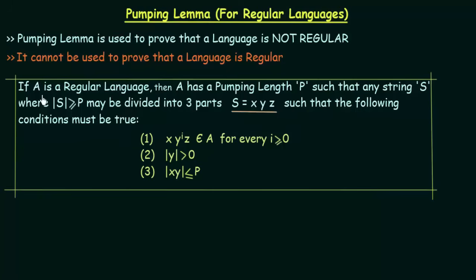Let's try to understand this statement before we come to the conditions. It states that if A is a regular language — suppose we have a language A and we assume it is regular — then A must have a pumping length P. Any string S where the length of S is greater than or equal to P may be divided into three parts. So if you take any string S from language A whose length is greater than or equal to the pumping length, then this string S can be divided into three parts: X, Y, and Z. You have to divide the string into three parts in such a way that the following conditions must be true.